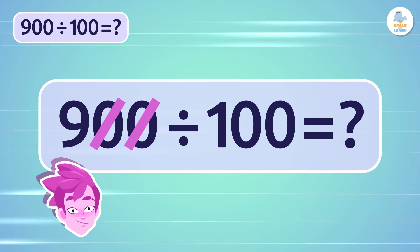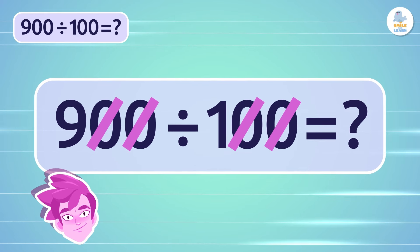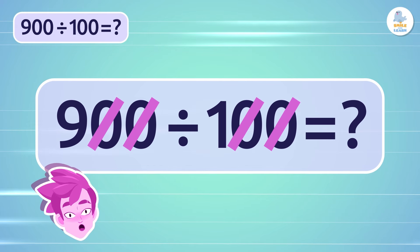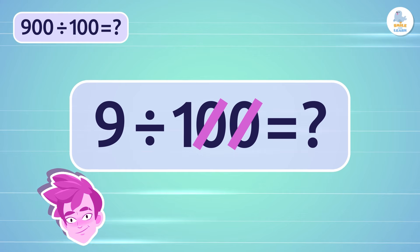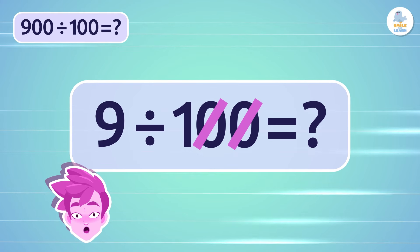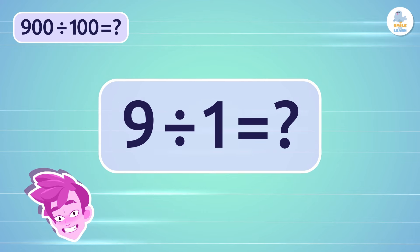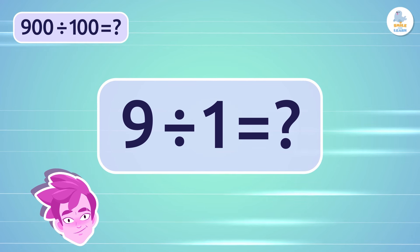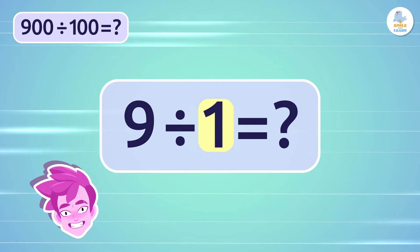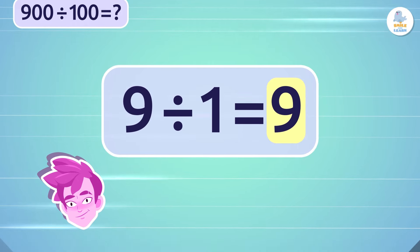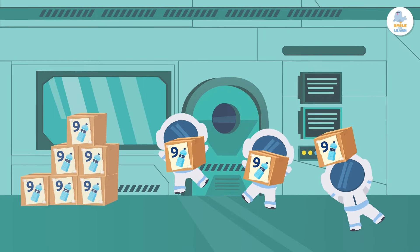When we remove the two zeros from 900, we get 9. When we remove the two zeros from 100, we get 1. Now the division is very easy: 9 divided by 1 equals 9. This means that each astronaut gets nine bottles of water!